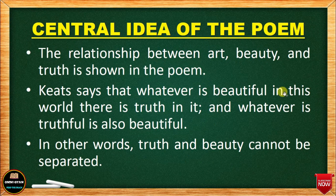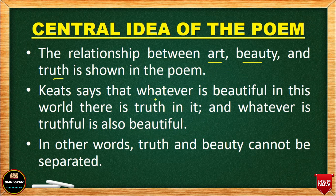So let us have a central idea — the theme of the poem. The relationship between art, beauty, and truth is shown in the poem. Keats says that whatever is beautiful in this world, there is truth in it, and whatever is truthful is also beautiful. Truth is beauty and beauty is truth. In other words, truth and beauty cannot be separated — both are the same.